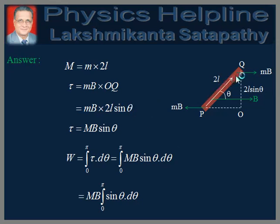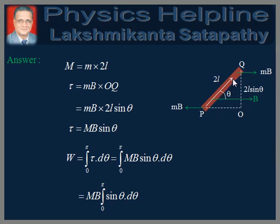Let the pole strength of the magnet be equal to m and the length of the magnet PQ be equal to 2L. Therefore, the magnetic moment M is equal to m into 2L. We observe that at some arbitrary orientation of the magnet, when the magnetic moment makes angle theta with the external field, the position of the magnet is shown in the figure in this orientation.